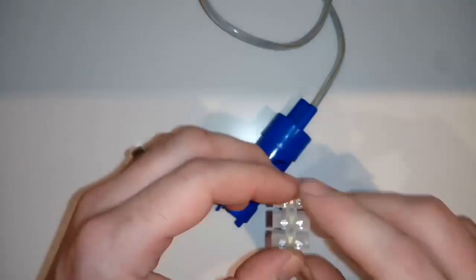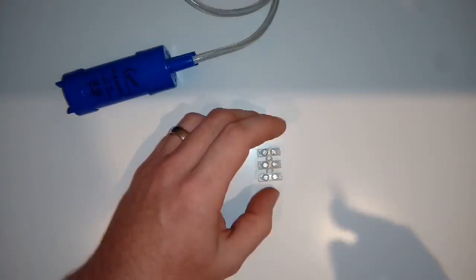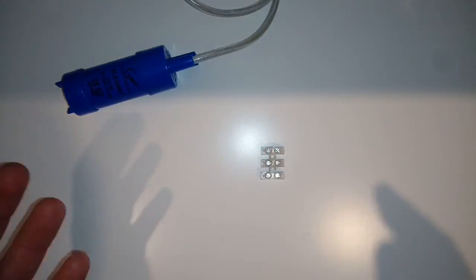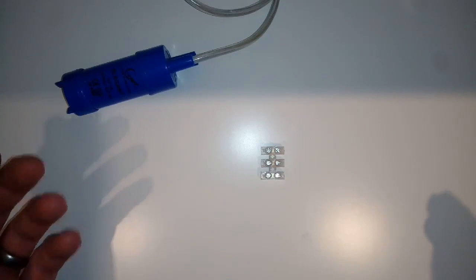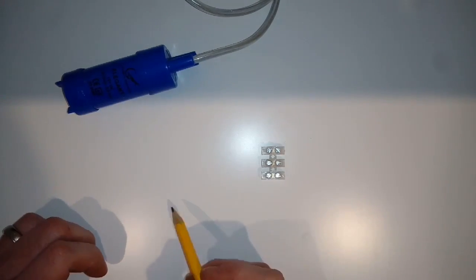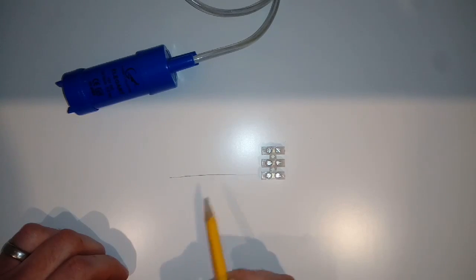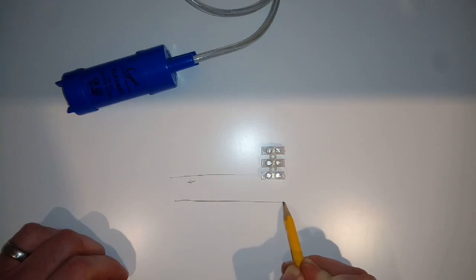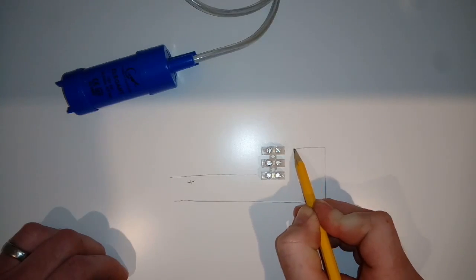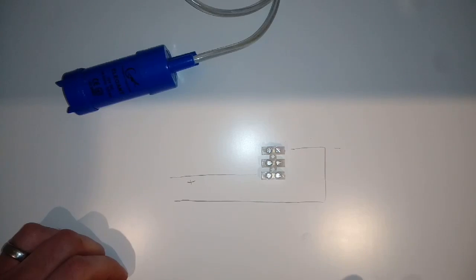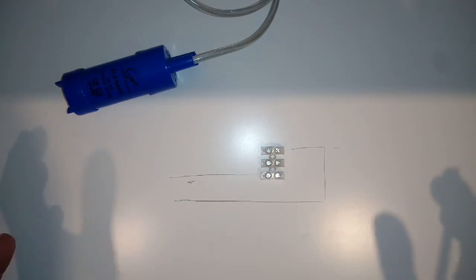Okay, to start off you will have obviously a main feed, a positive and negative. Basically, you'll come in at the bottom there with your positive feed, and then with your negative you're going to come all the way up to the other side with your negative.